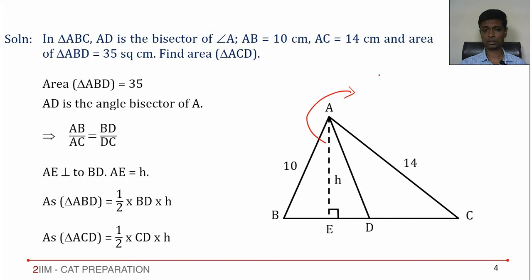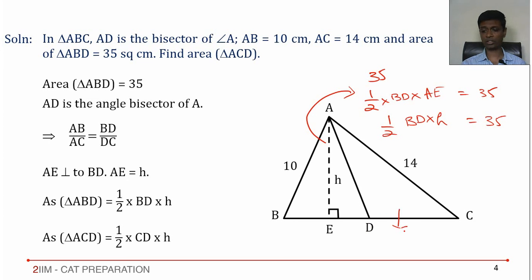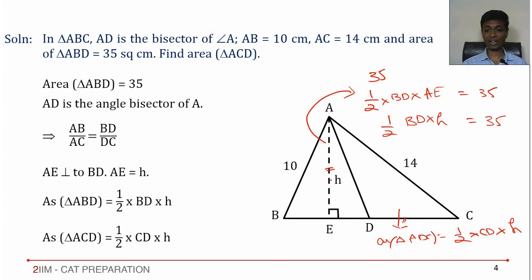We know the area of triangle ABD is 35. That equals half times BD times AE — note it's AE, not AD — where AE is the perpendicular height h. So half times BD times h = 35. We need to find the area of triangle ACD, which is half times CD times the same height h, because the height from A is the same for both triangles.